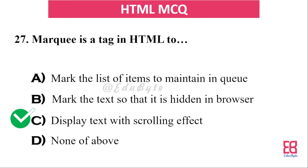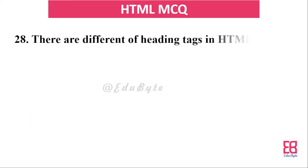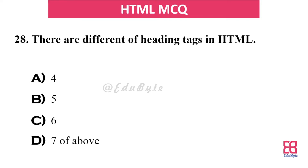Question twenty-four: how many different heading tags are there in HTML? The options are four, five, six, and seven. The correct answer is six — there are six heading tags from h1 to h6, where h1 is the largest and h6 is the smallest.